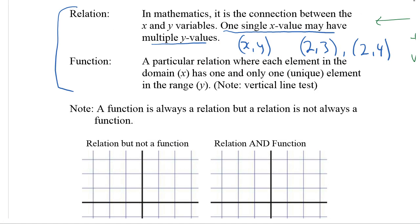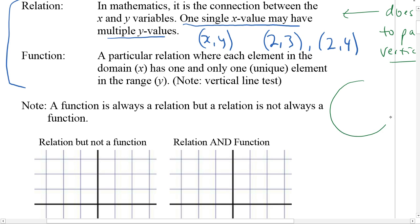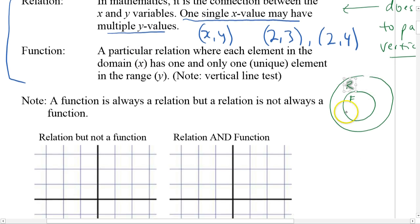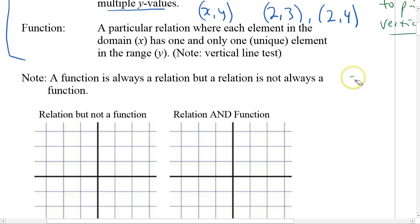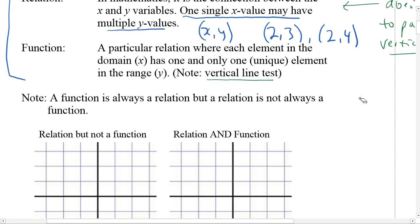So now, a function is a type of relation. If we're talking about the set of all things that are relations, inside of that would be the set of functions. So all functions are relations, but not all relations are functions. A particular relation where each element has one and only one unique element in the range y — that is a function. So it does have to pass the vertical line test.